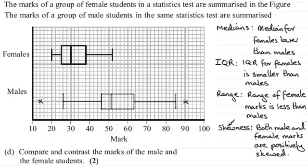Or finally, the skewness. Both male and female marks are positively skewed. As you can see, they're much more stretched out in this direction in both of these examples. We're really looking for this width here — Q3 minus Q2 — it's much greater than Q2 minus Q1, this width here, in both these examples, indicating positive skew.